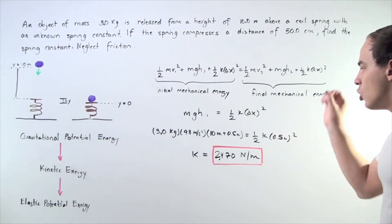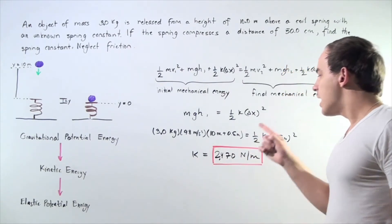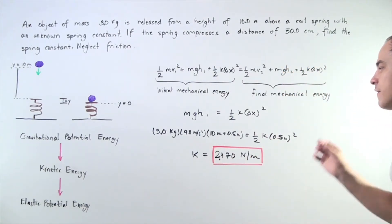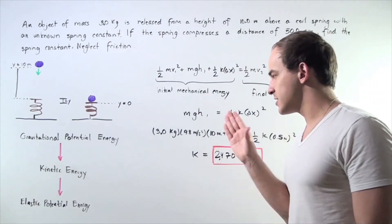We plug that in, we solve for k, and we find that k is equal to approximately 2,470 newtons per meter. This is the spring stiffness constant of our massless spring.